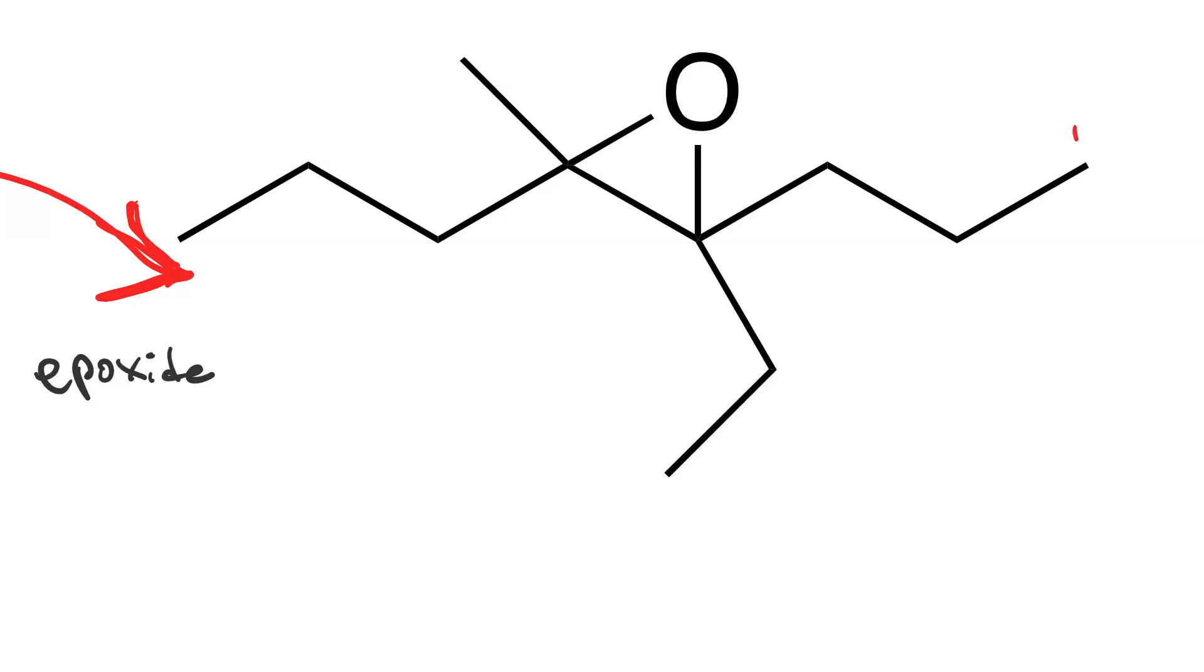So we count the carbons. We have 1,2,3,4,5,6,7,8. Or we could count left to right, 1,2,3,4,5,6,7,8. So we're not going to get lower locants either way. There are four substituents.